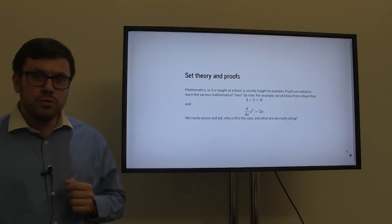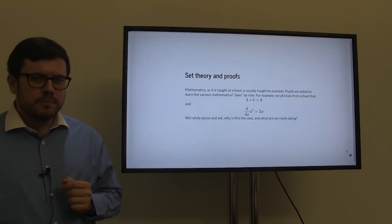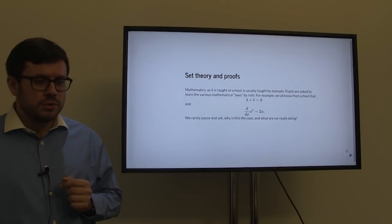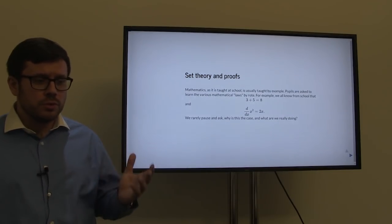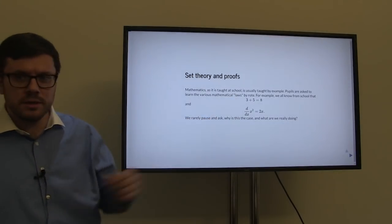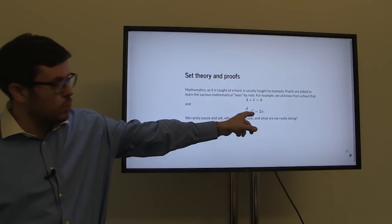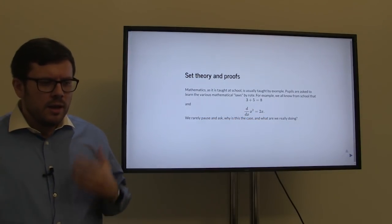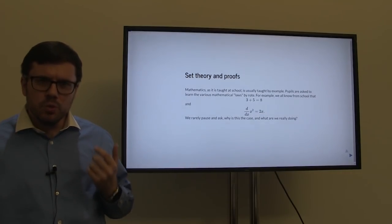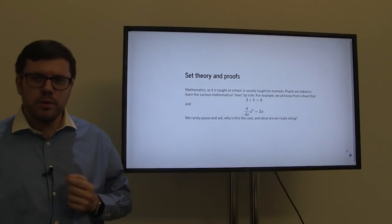The way mathematics is usually taught at school, it is usually taught by example. Pupils are asked to learn the various mathematical laws by rote. For example, we all know from school that 3 plus 5 is equal to 8, and that the derivative of x squared is 2x. But we rarely pause and ask why this is the case and what we are really doing when we write these down formally.